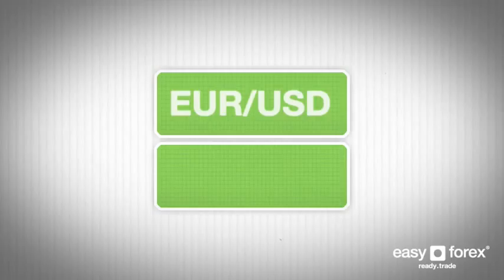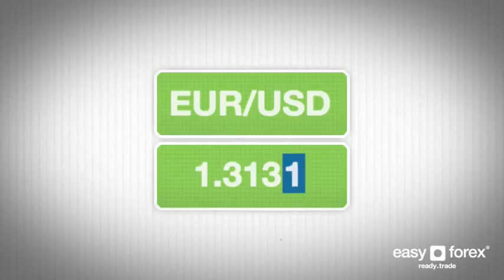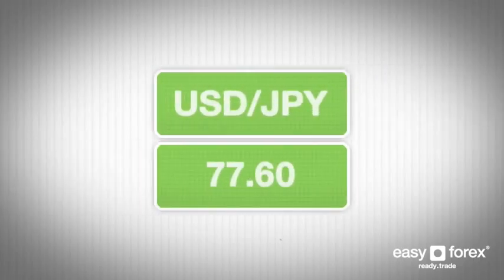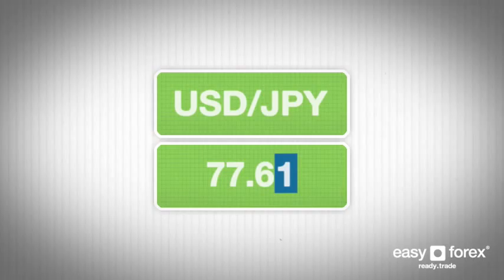When we look at the Euro-US dollar pair and see it move from 1.3130 to 1.3131, it has moved one PIP because the fourth decimal point has increased by one. A one PIP move for the US dollar-Japanese yen we can see as 77.60 to 77.61, because the second decimal point has increased by one.